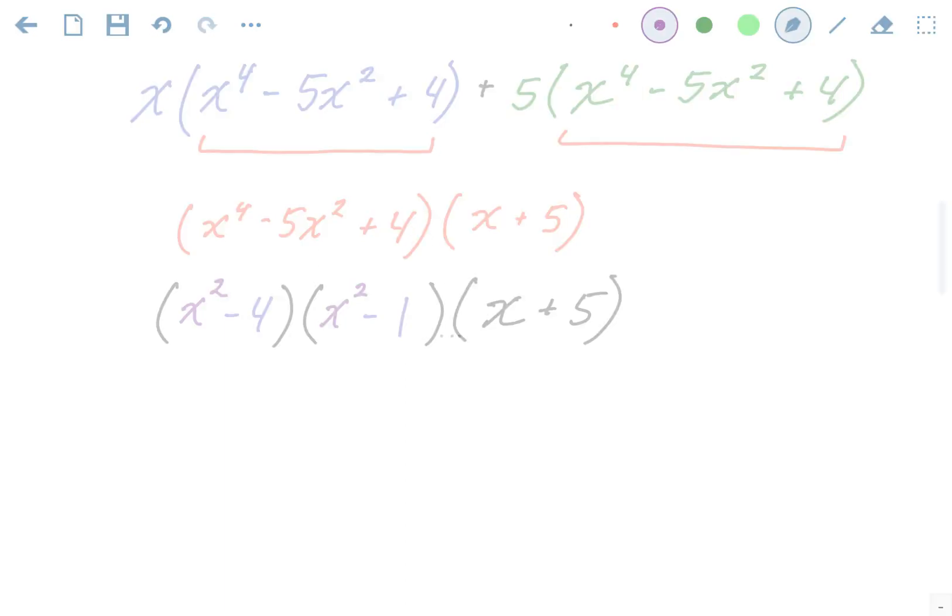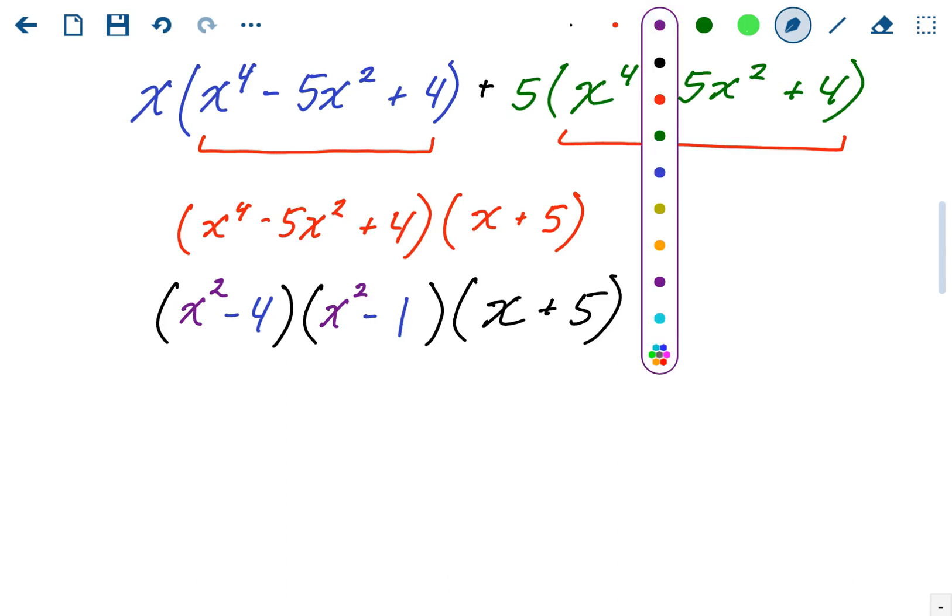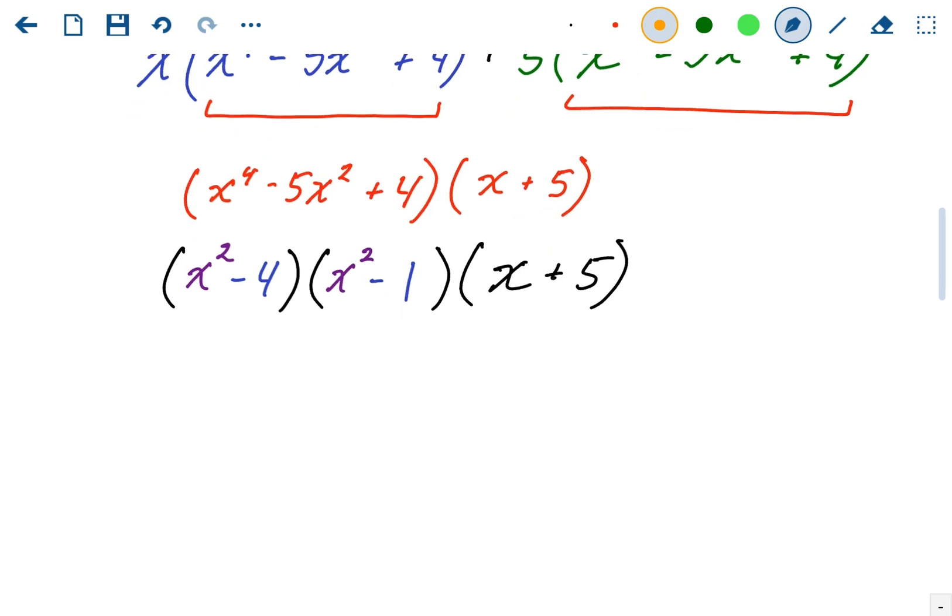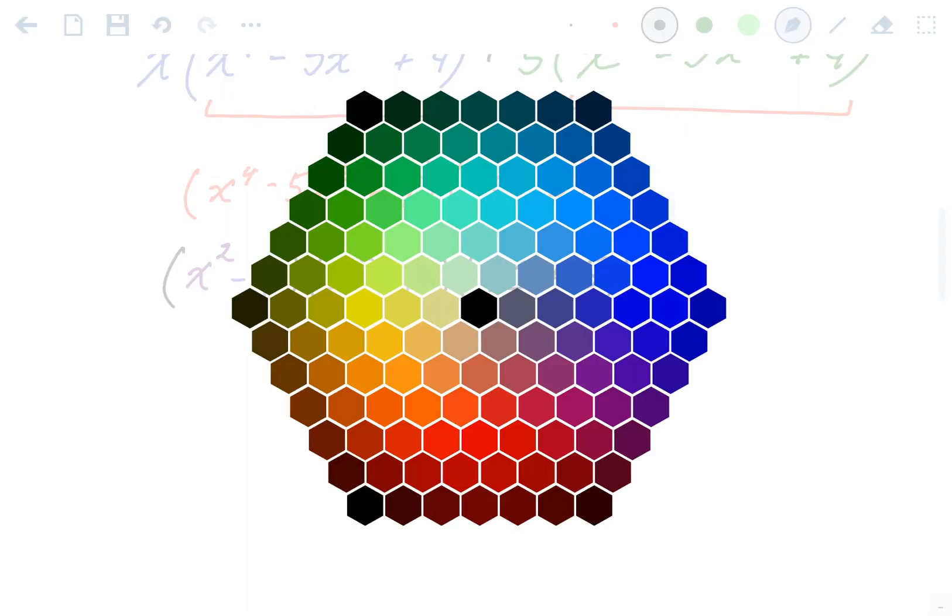So this looks factored to us. We have a bunch of binomials multiplied together. But we're not done yet. If you notice something special about these two binomials, you have x squared minus 4 and x squared minus 1. Whenever there's two terms, there's a chance for that to be a difference of squares. One of those special patterns. And in this case, it is. They both have two terms. Each term is a perfect square. And you're subtracting. So that's a difference of squares. So we could factor both of these terms again.